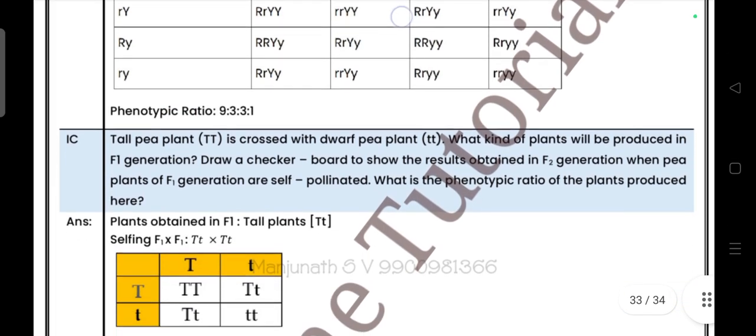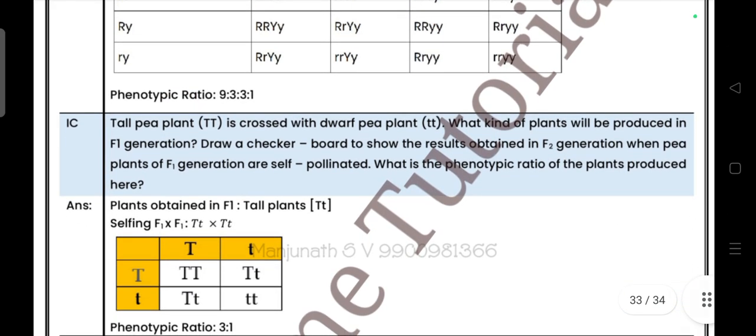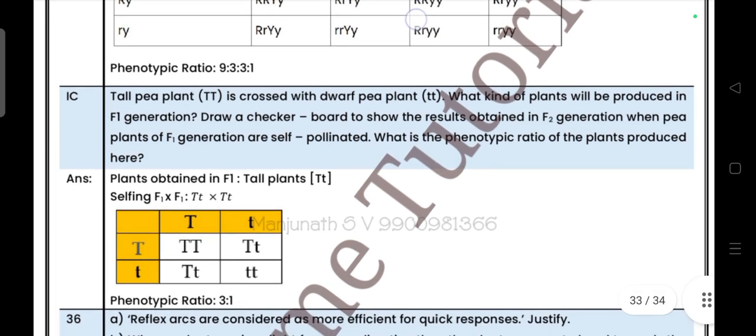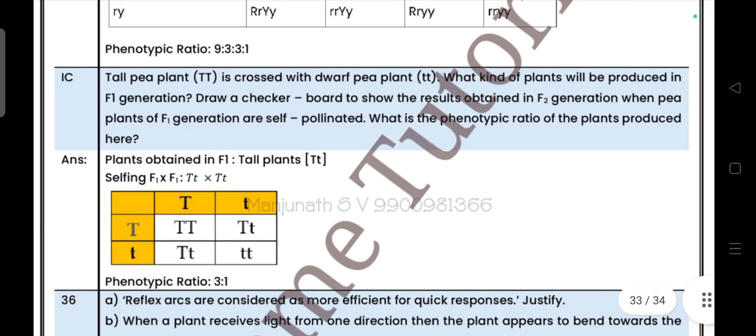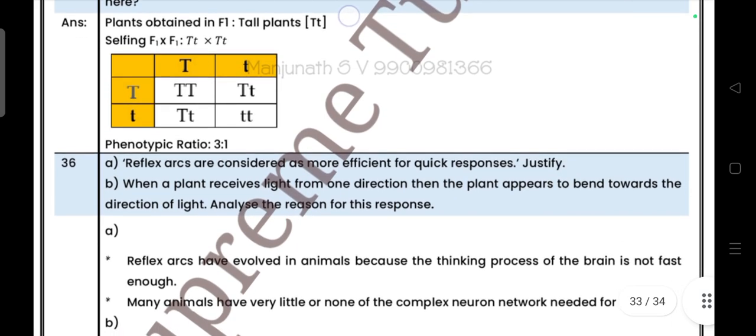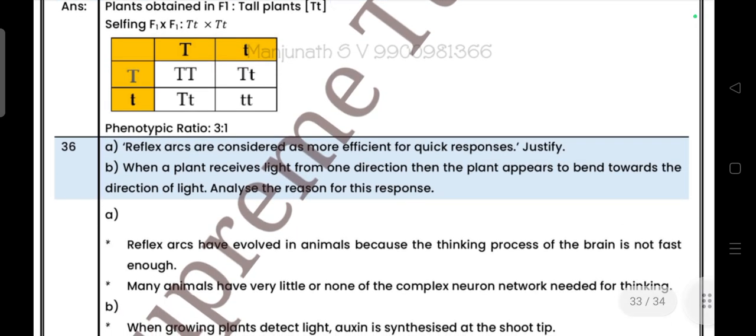Next: T plant of Tt is crossed with the dwarf plant of tt. What kind of plants will be produced in the F1 generation? Draw the checkerboard to show the results obtained in F2 generation when the F1 plants are self-pollinated. What is the phenotypic ratio?